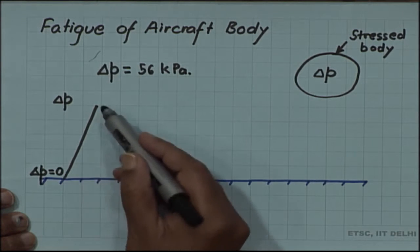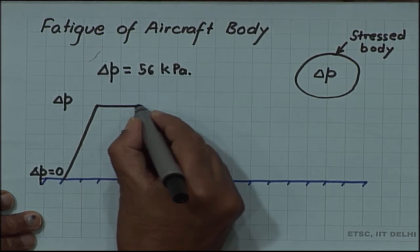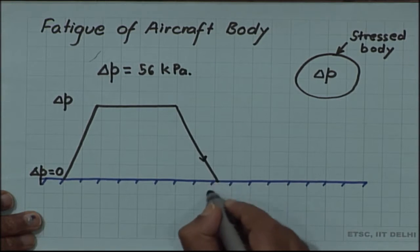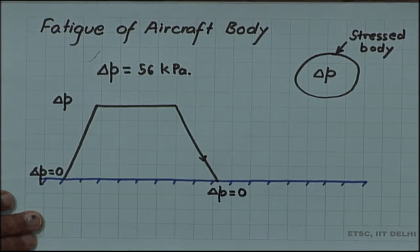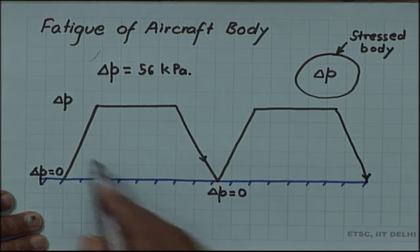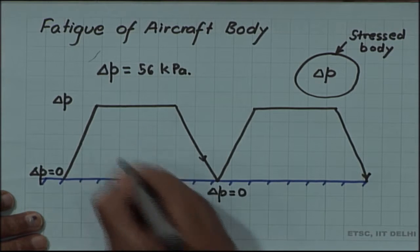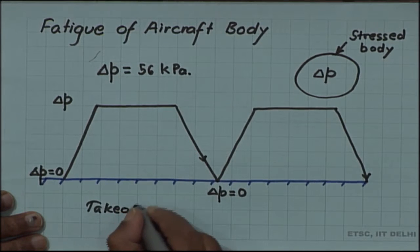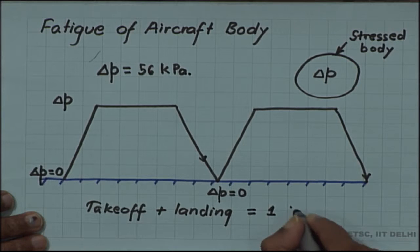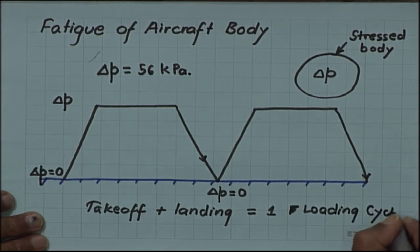This pressure will stress the cabin or the aircraft body. But when the aircraft was at ground, there was no pressure difference because inside and outside both were atmospheric pressure, so delta p was 0. When it reaches cruising altitude, delta p is 56 kilopascals. At cruising altitude the pressure differential is constant, but when it lands, the pressure difference goes back to delta p equal to 0. Each takeoff and landing, pressure goes from 0 to 56 kilopascals and back to 0. So each takeoff and landing is one cycle of fatigue.